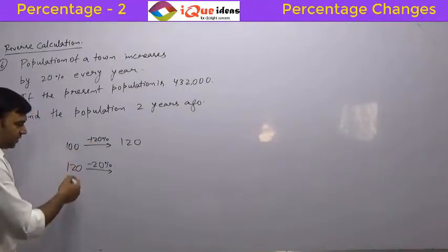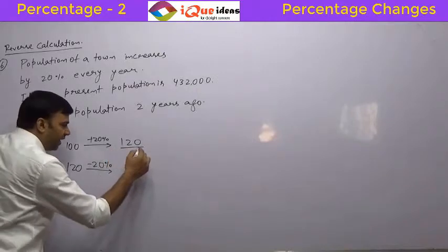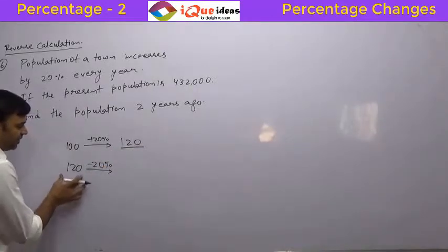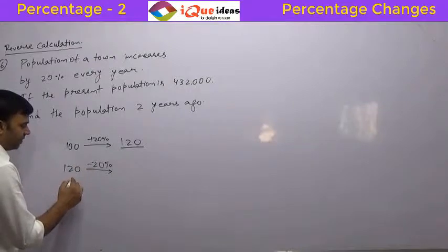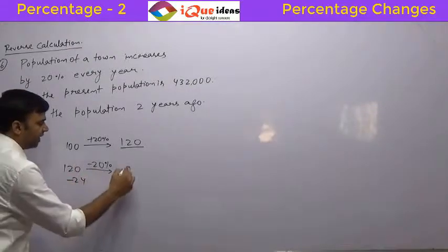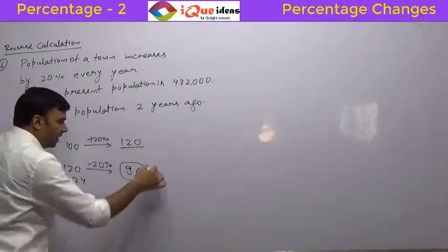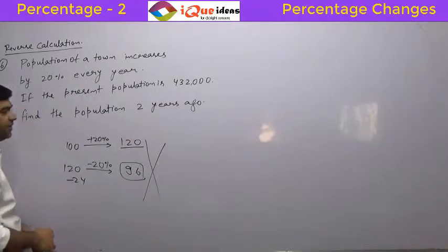Be really careful here. If I reduce 120 by 20 percent: 10 percent of 120 is 12, so 20 percent is 24. Subtracting 24 gives 96, not 100. So the reverse calculation never works in percentage directly.